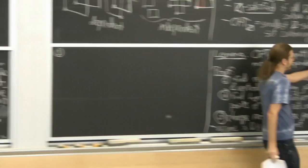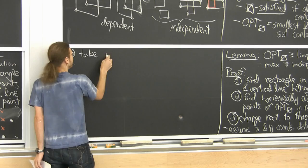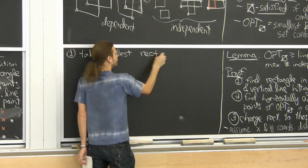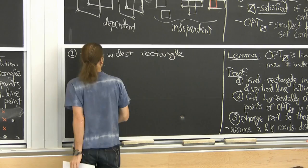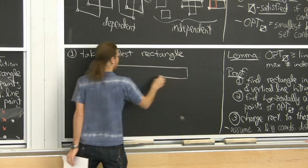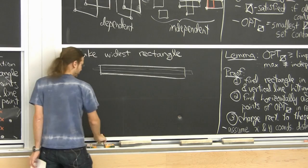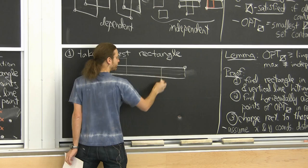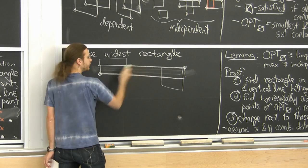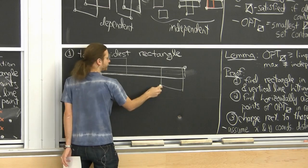For step one: take the widest rectangle — the one with maximum x extent. This tells us there's no other rectangle that's wider. What we must have is a picture where other rectangles that are anchored to the lower-left or upper-right can't touch each other, because that would require equal x-coordinates — which we've forbidden — or one would have a corner strictly inside the other.